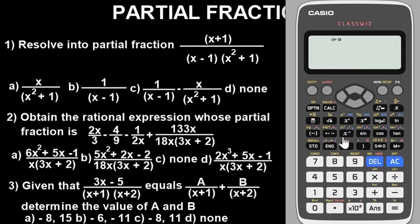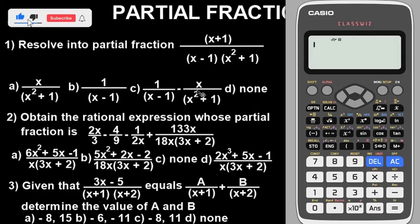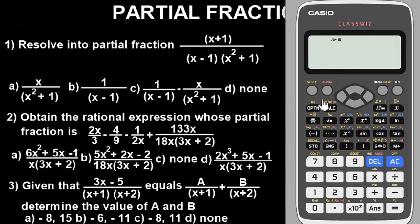Having cleared the calculator, let's store a number. The idea behind solving partial fractions on the calculator is to use a stored number to substitute into the expression, and then use that same stored number to simplify the answer options. You can choose any number to store, but I recommend 2. I personally practice with 2 and have not found any errors, so we'll work with 2. To store it, type 2, press the STO button, then press X — this stores 2 as X in the calculator.